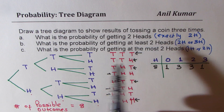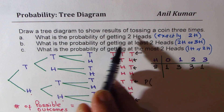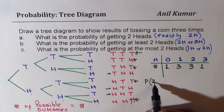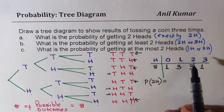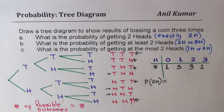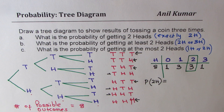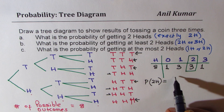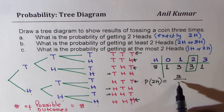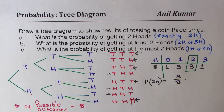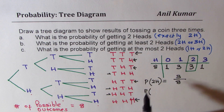That becomes simple enough for us to answer the questions. First: the probability of getting exactly two heads. Two heads — there are only three ways, so favorable outcomes is three and total possible are eight. We get three out of eight.